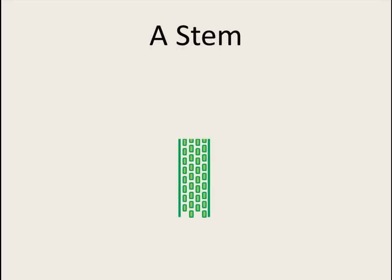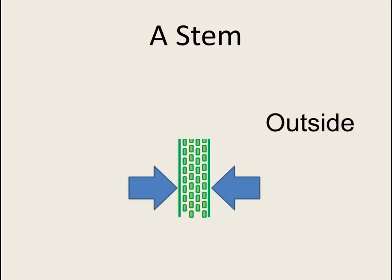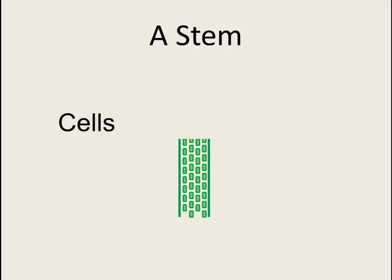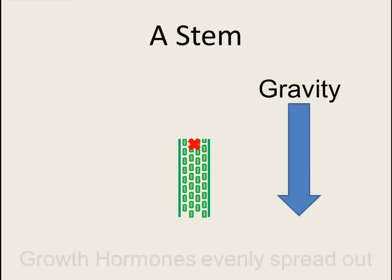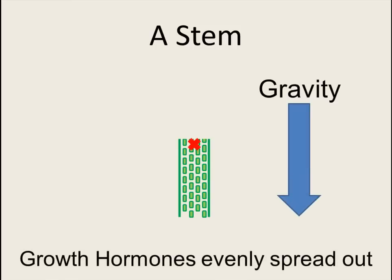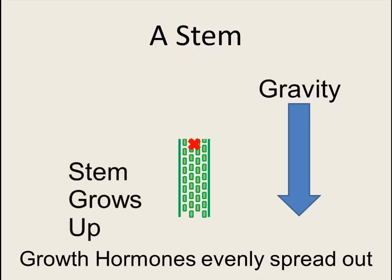Here we have a stem — again, very simple. The outside are these solid green lines. The cells would be these little boxes on the inside. The part of the stem that grows is the very top of the stem; that is where the plant gets taller. Gravity pulls down. The growth hormones in the stem are evenly spread out, so the stem grows up.